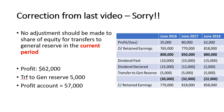In the last video, in the calculation of share of equity from the current period, there's a transfer to the general reserve of $5,000 which I made an adjustment to the share of equity for. But that is wrong. No adjustment should be made to the share of equity for transfers to the general reserve in the current period. I should not have made an adjustment there.